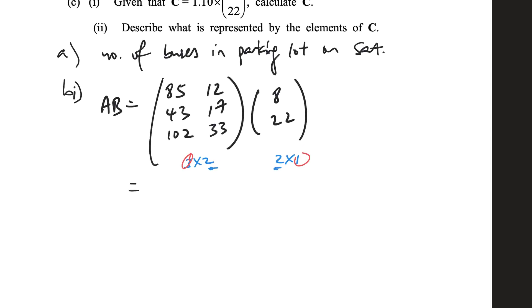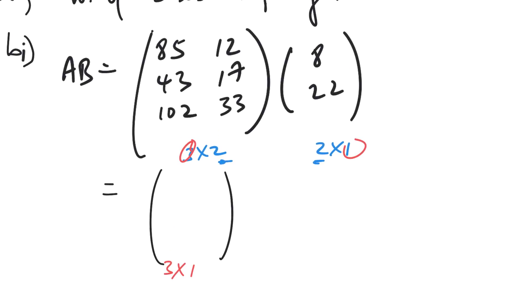I'm going to end up with a 3 by 1 matrix over here. So I can see first row, one column. It's going to be 3 by 1. So 1, 2, 3. So this first row, one column, move it down: 85 with 8, 12 with 22. So this is going to be 85 times 8 plus 12 times 22.